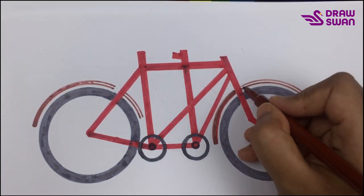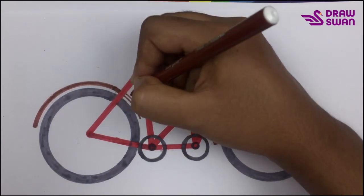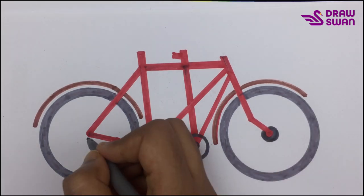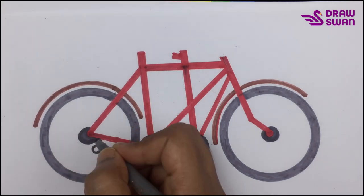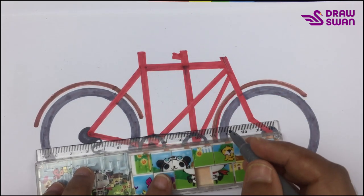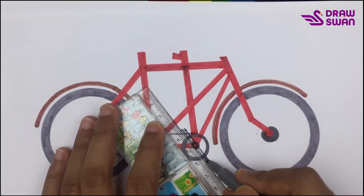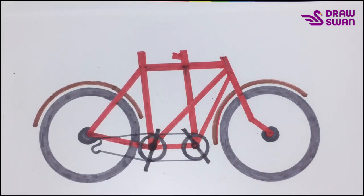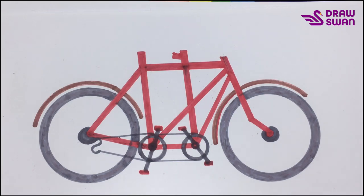And I'm filling the cover of the wheel with my brown pen. This is the chain of the cycle. And I'm drawing its paddle. Let's use a little bit of red color. Let's draw the spoke of the wheel.